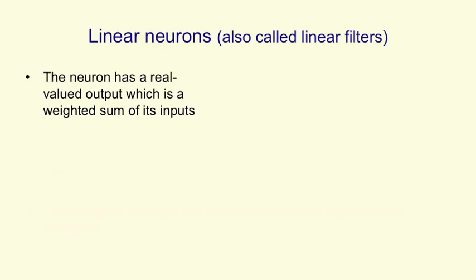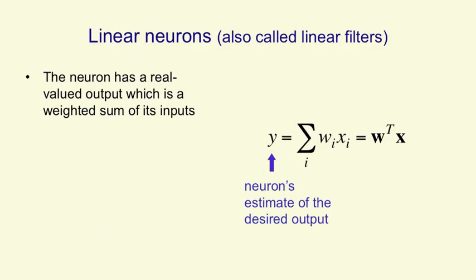Linear neurons, which are also called linear filters in electrical engineering, have a real valued output that's simply the weighted sum of their inputs. The output y, which is the neuron's estimate of the target value, is a sum over all their inputs i of a weight vector times an input vector.